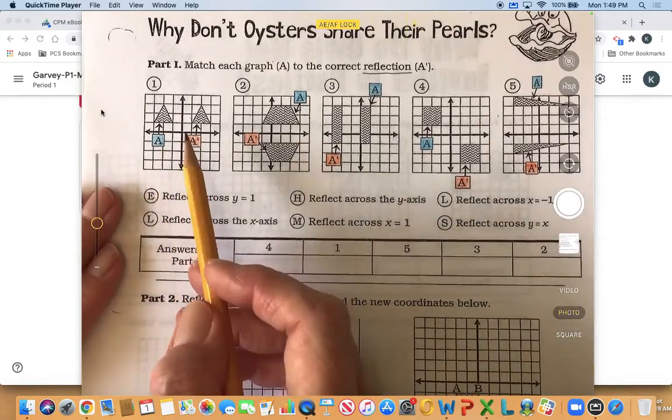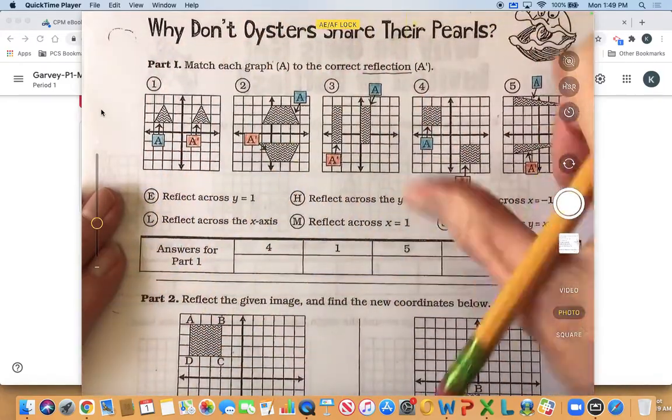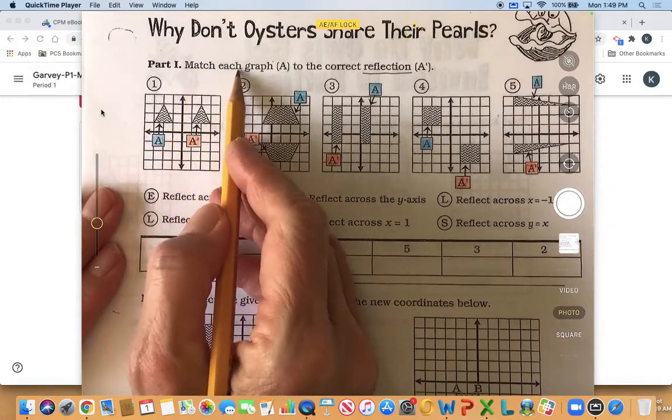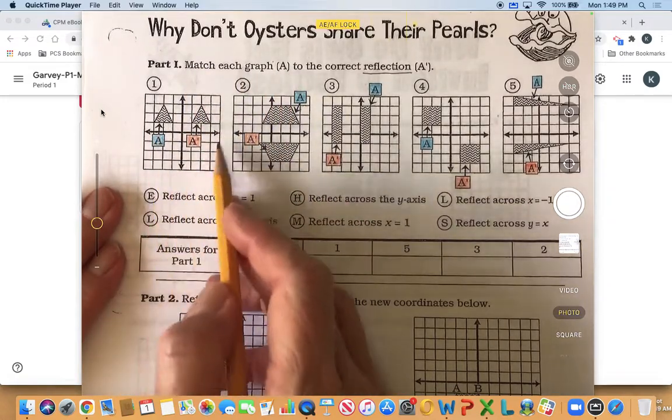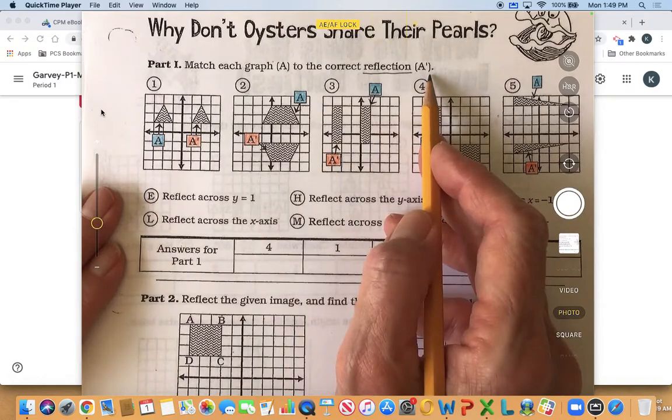So first of all in part A, which is this whole top part, it says match each graph, so here's a graph, to the correct reflection.